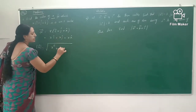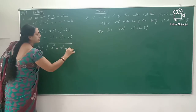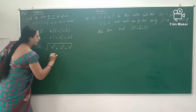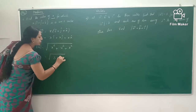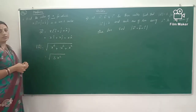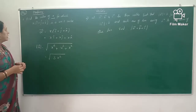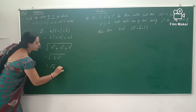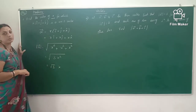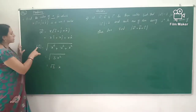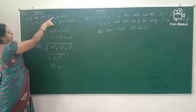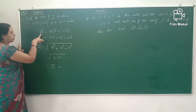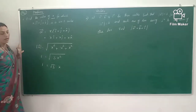Since each component is x, we have x-square plus x-square plus x-square, which is 3x-square. So the magnitude is root 3 times x. Square root of x-square is nothing but x, so the magnitude equals root 3 of x. Since it is given to find the value of x for which the vector is a unit vector, the magnitude of a is nothing but 1.